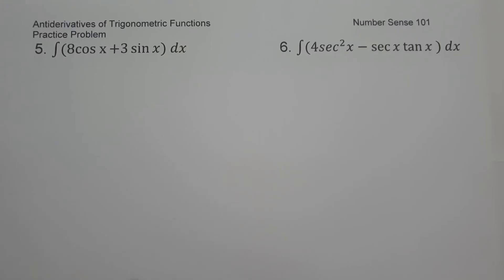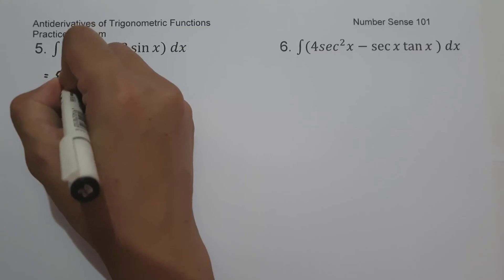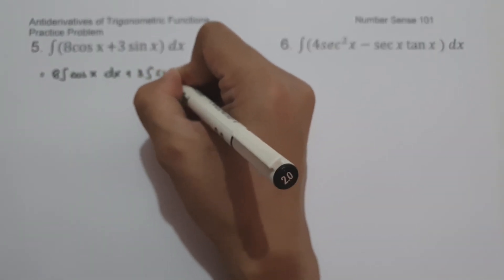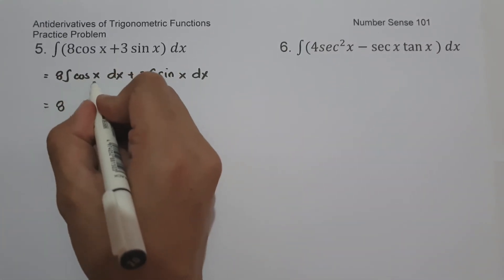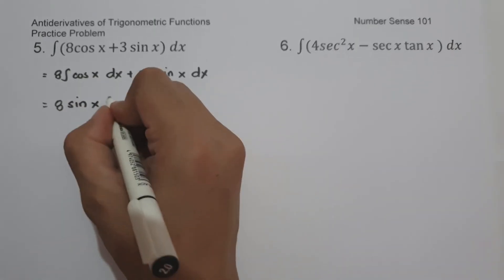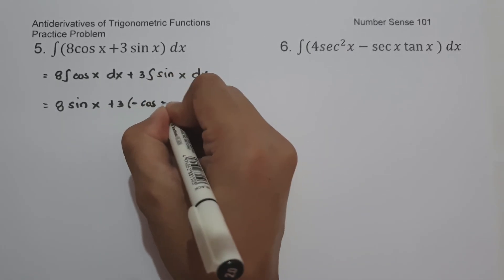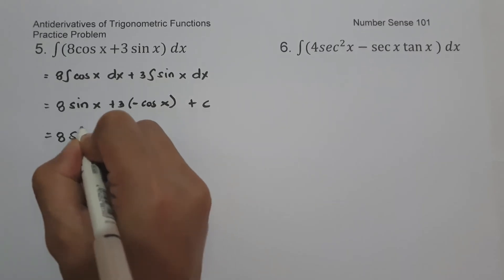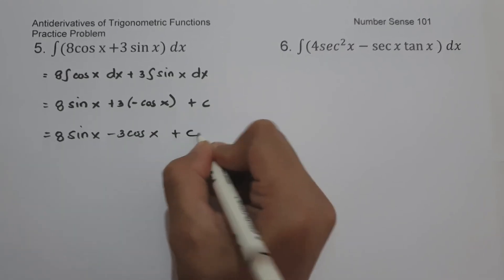On example number five, what is the antiderivative of 8 cosine x plus 3 sine x dx? To simplify this one, let us have 8 times the antiderivative of cosine x dx plus 3 times the antiderivative of sine x dx. So we have 8 times sine x, plus 3 times the antiderivative of sine x dx, which is negative cosine x, plus c. To simplify, this will be 8 sine x minus 3 cosine x plus c. And this will be our answer.